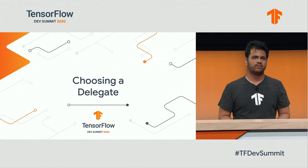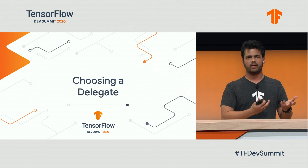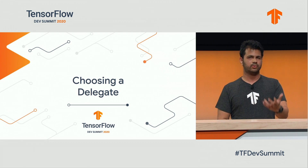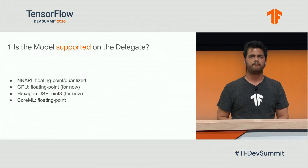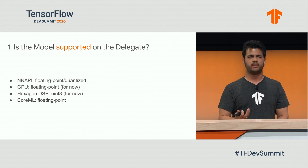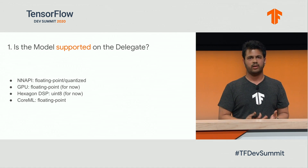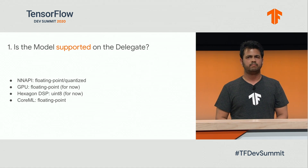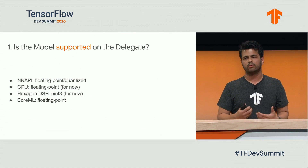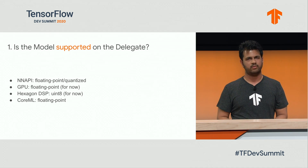Of course, it's not as easy as taking any random model and giving it any delegate. You have to think about a few questions before you choose a delegate to use with your model. The first consideration is whether the model is supported on the delegate. For example, if you pass a floating-point model to the DSP delegate, nothing will happen. Or if you give the GPU delegate a quantized model, for now, it won't run. The delegates, if given a model that they don't support, will simply reject all the nodes, and everything will run on CPU, so there will be no improvement to performance at all.